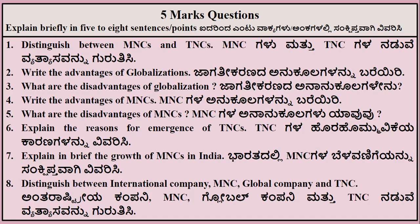What are the disadvantages of globalization? You have to explain each and every point you have written in the answer. Write the advantages of MNCs. When you are writing for five marks, there should be at least a minimum of five points explained. Minimum and maximum is up to you, but you have to manage the time properly. Don't write a ten-marks style answer — aim for five to six or maximum seven points for a five-marks question.